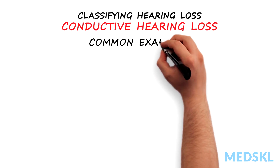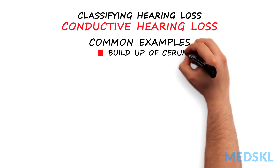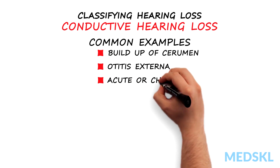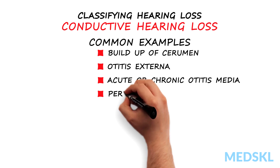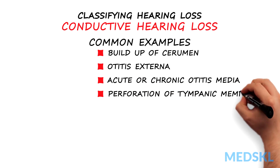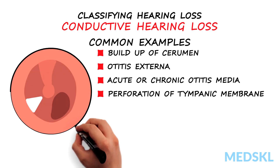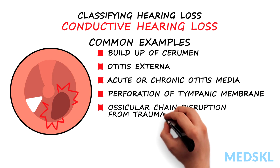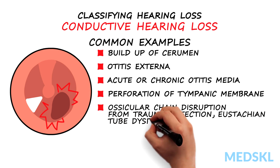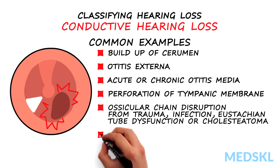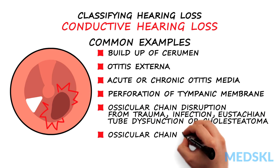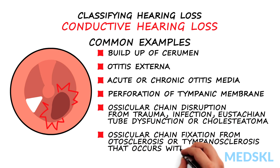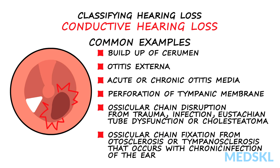Common examples of conductive hearing loss include buildup of cerumen in the external canal, otitis externa, acute or chronic otitis media, perforation of the tympanic membrane, ossicular chain disruption from trauma, infection, eustachian tube dysfunction, or cholesteatoma, and ossicular chain fixation from otosclerosis or tympanosclerosis that occurs with chronic infection of the ear.